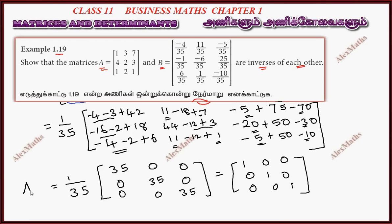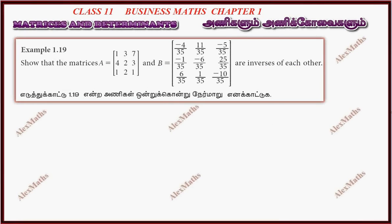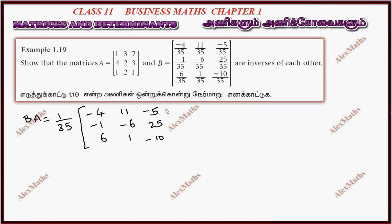So A into B equals the identity matrix. Now for the second part, we compute B into A. B equals 1 by 35 times the matrix: 10, minus 4, 11, minus 5, minus 1, minus 6, 25, 6, 1, minus 10; multiplied by A which is 1, 3, 7, 4, 2, 3, 1, 2, 1.